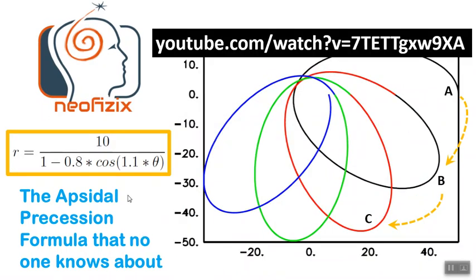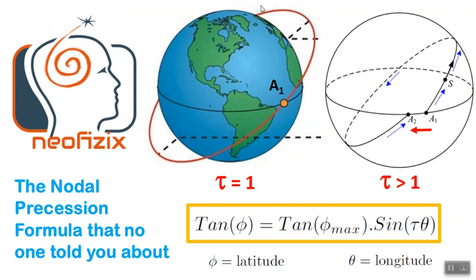This discussion is a continuation of the discussion about apsidal precession — the link to that video is in the description. In nodal precession, the orbital plane of an elliptic orbit itself precesses around the rotational axis. This inclined plane encompasses the elliptic satellite orbit around the earth (shown in red), and the plane encompassing this red line itself rotates about the north-south axis of the earth. We can best visualize it in full 3D in our VR headset.